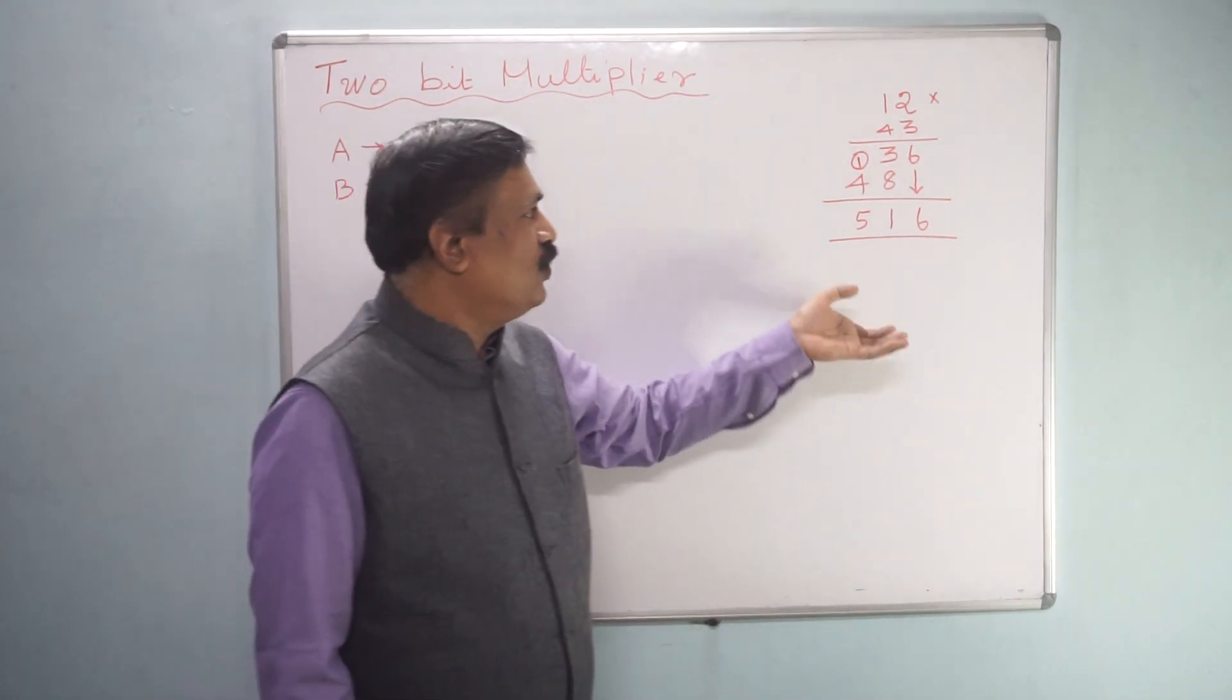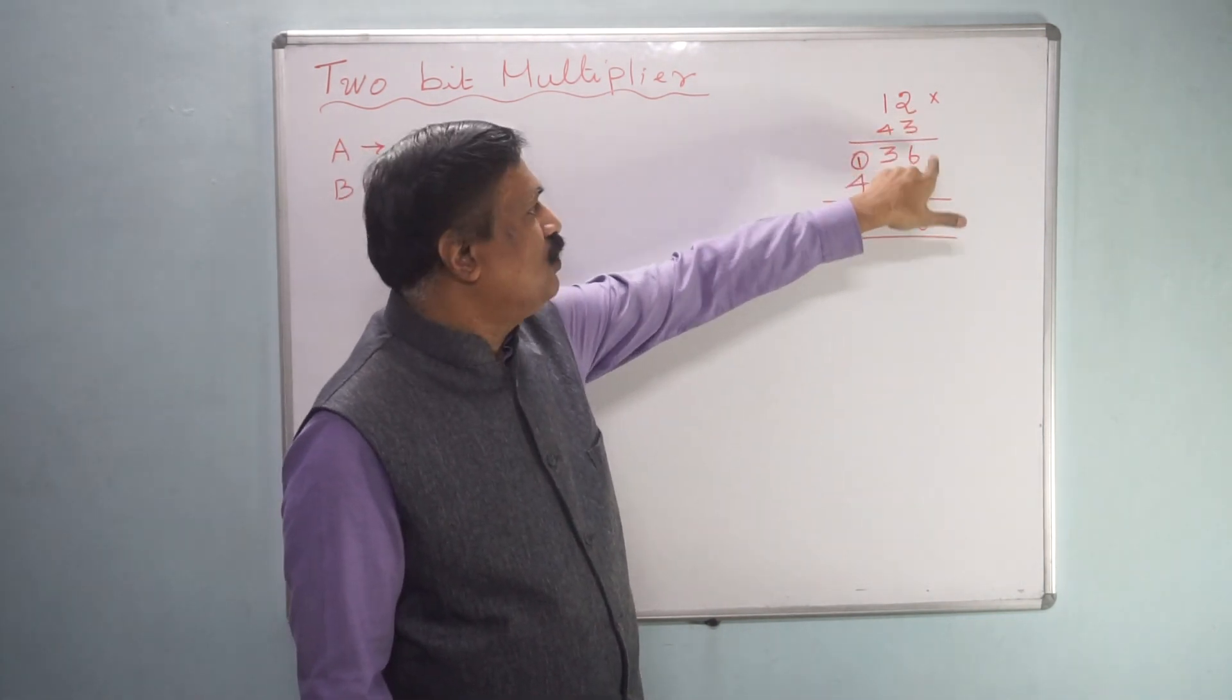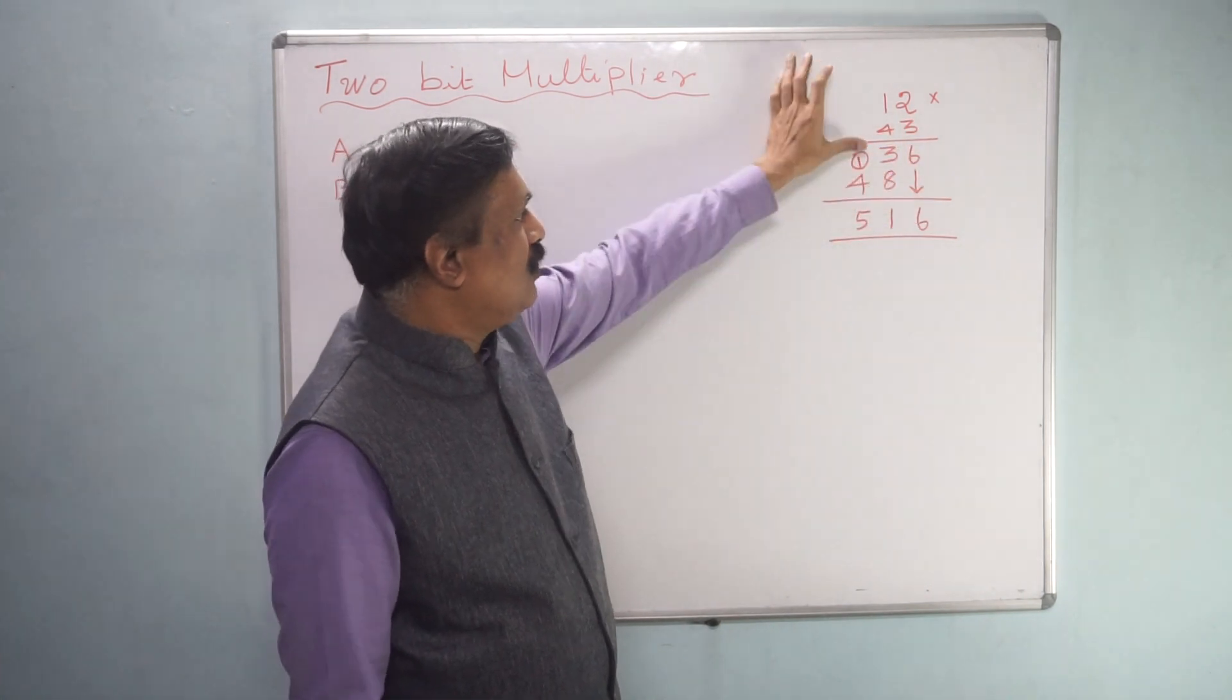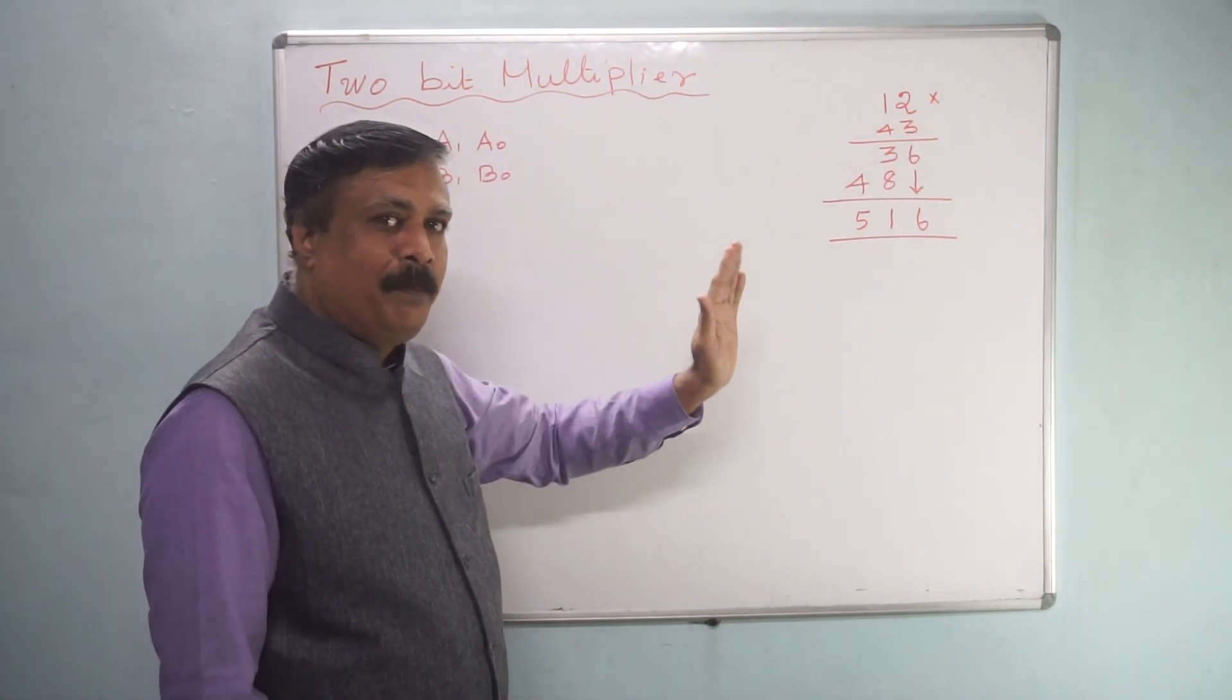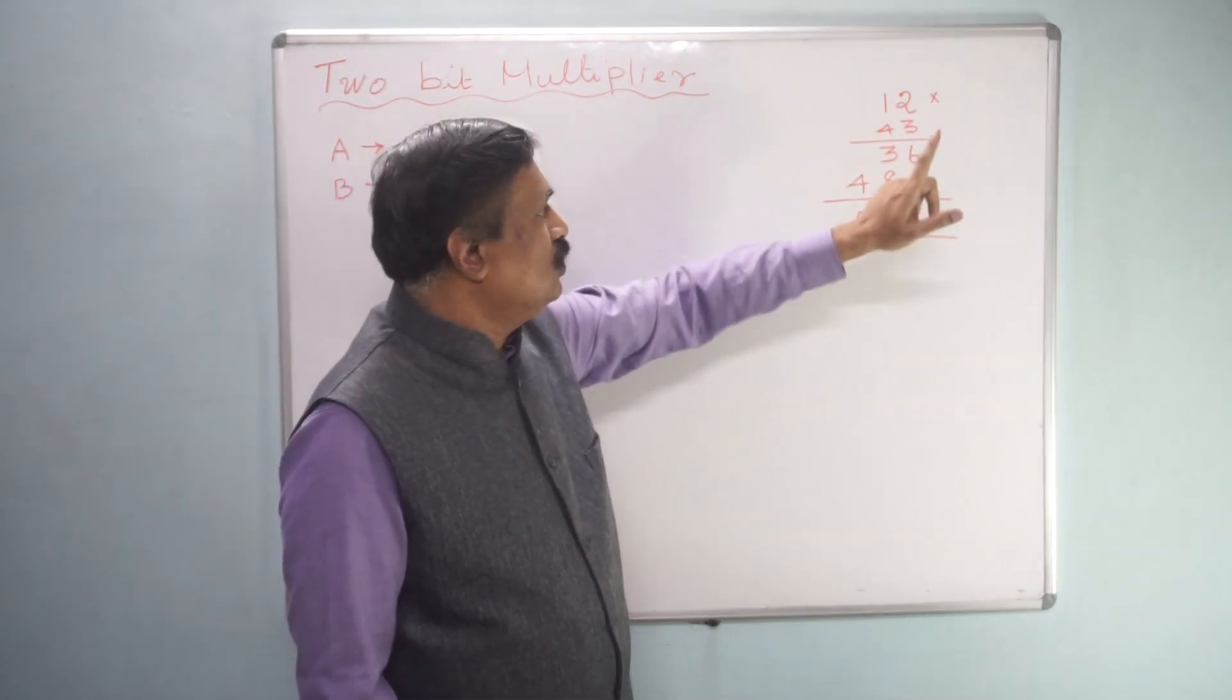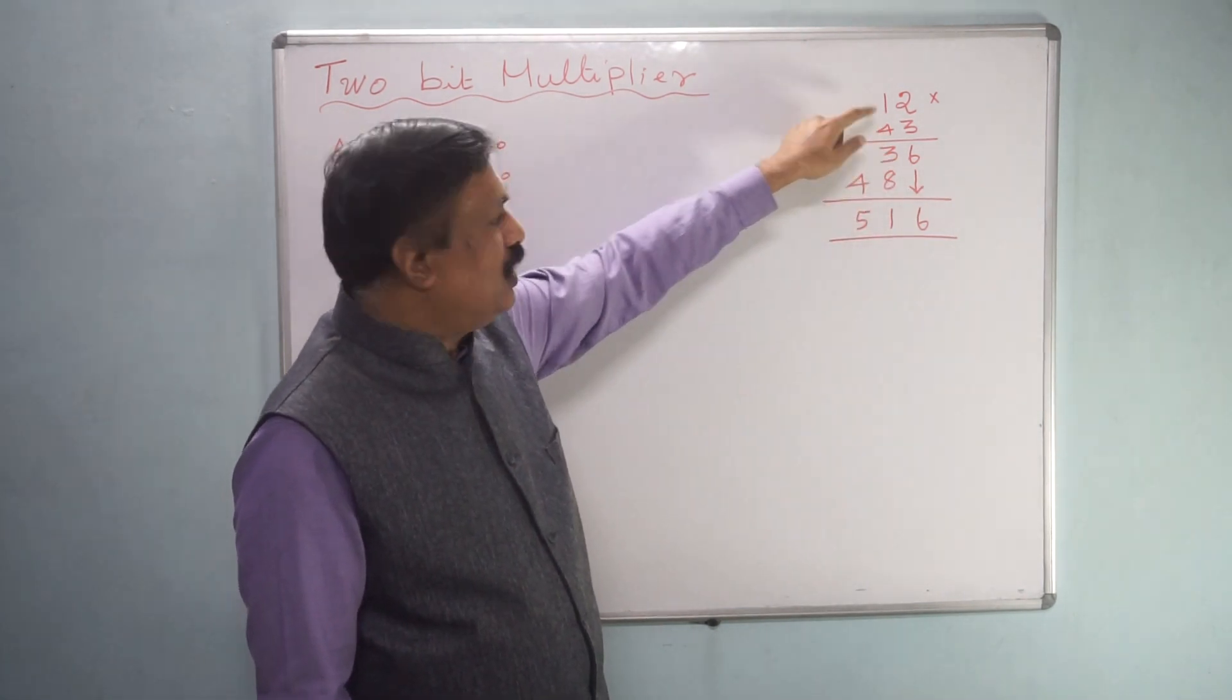First what we are doing, first we are multiplying 3 by 2 and you are writing 6 and 1 into 3, 3. After that you are multiplying 4 and you are shifting 1 digit left. That means 4 into 2, 8, you are not writing here, you are writing here.